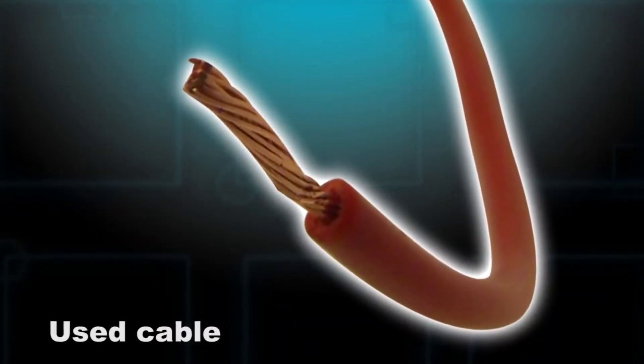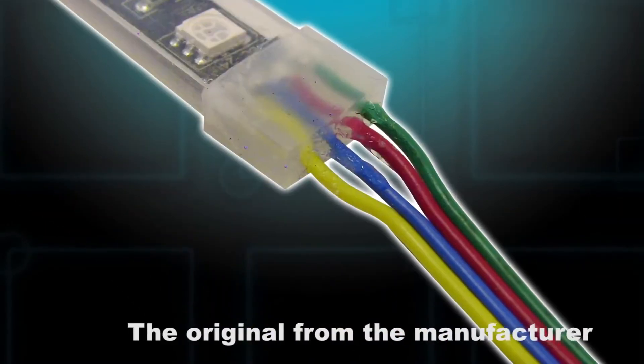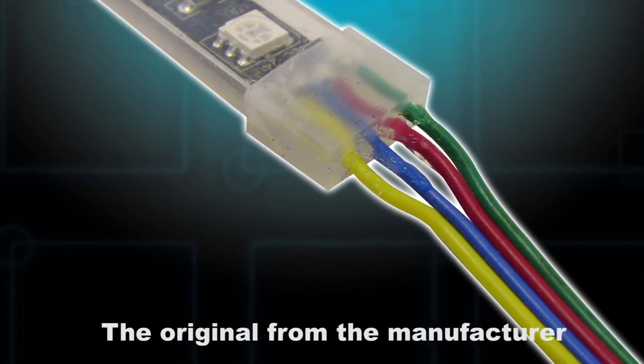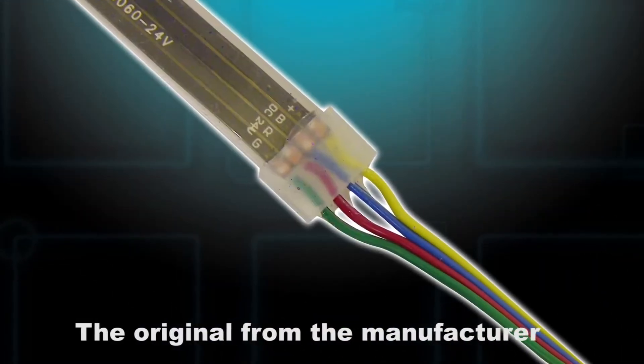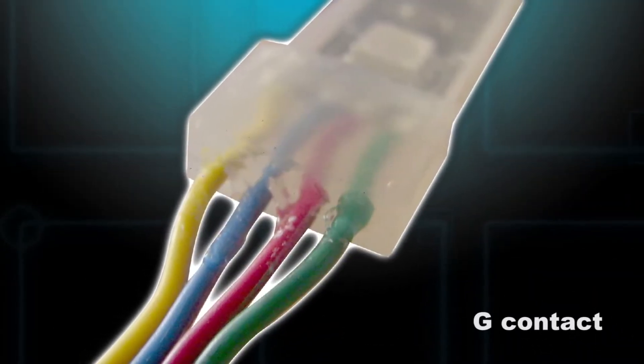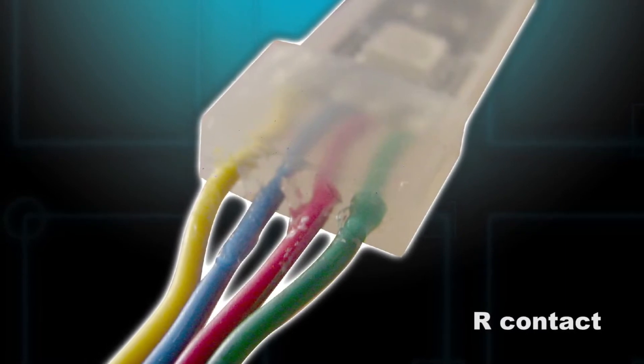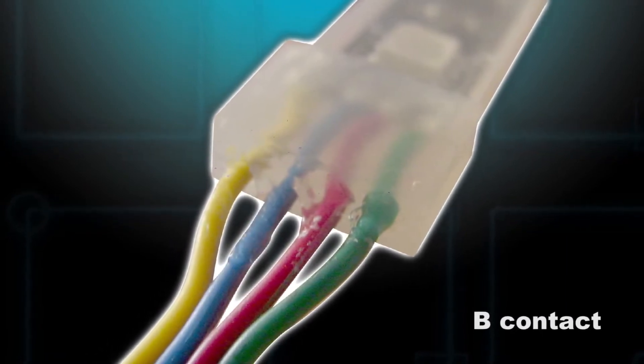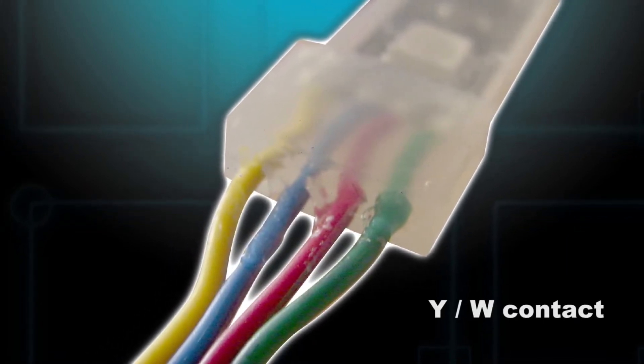The manufacturer usually provides information on an LED strip to instruct which color goes to which contact and where the plus is. The most common setup is green cable to G contact, red cable to R contact, blue cable to B contact, and yellow or white cable for plus.